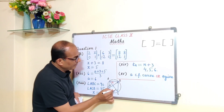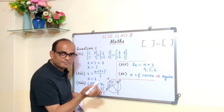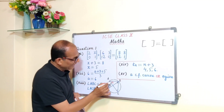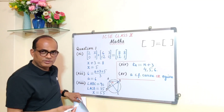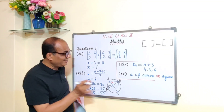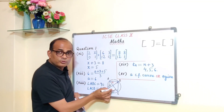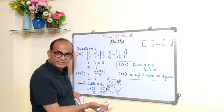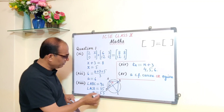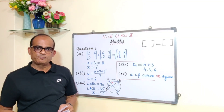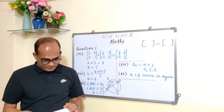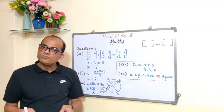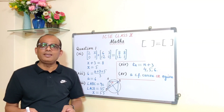Since angle ABC is 90°, the two remaining angles must sum to 90°. So x plus 35 equals 90, therefore x is equal to 90 minus 35 is equal to 55. The degree measure of X is 55 degrees and option A is correct.